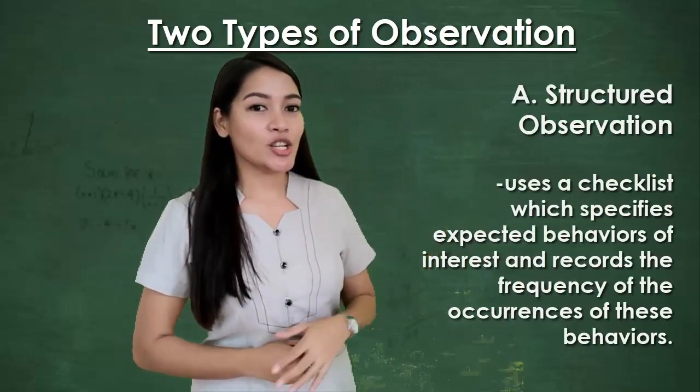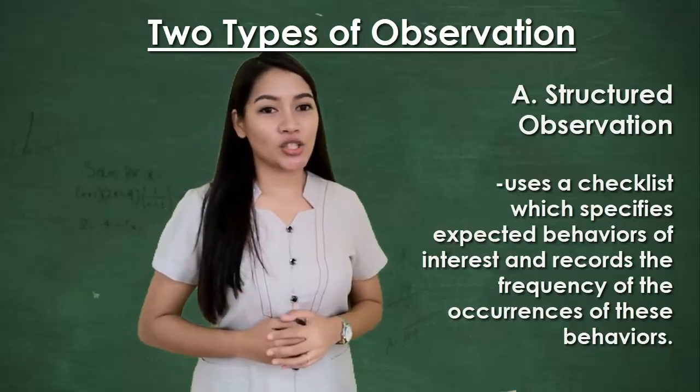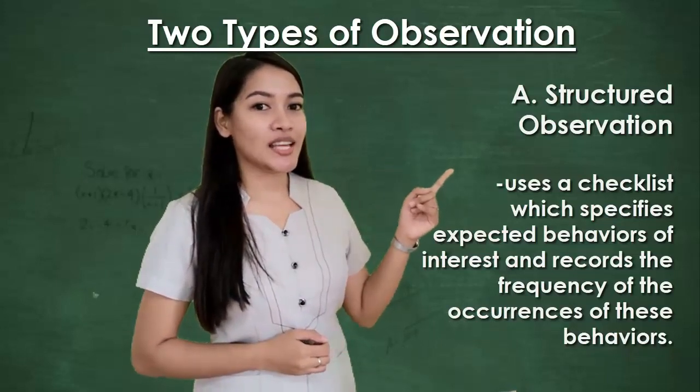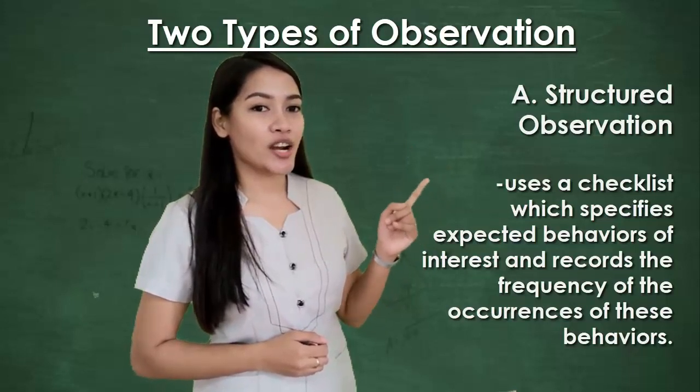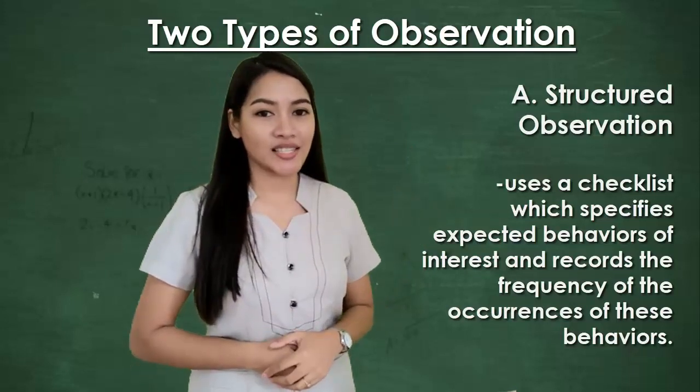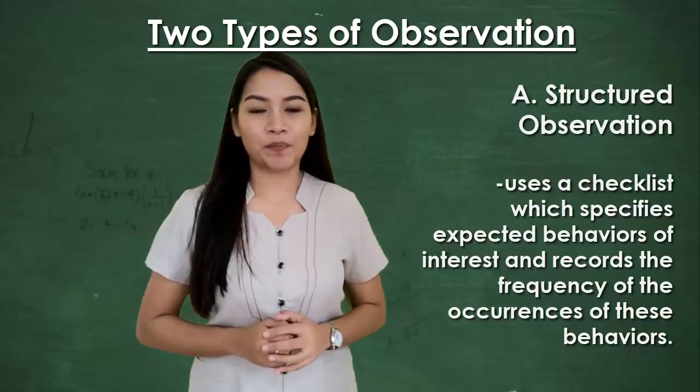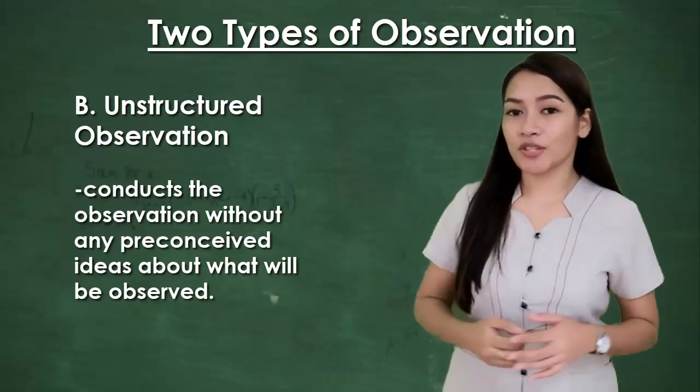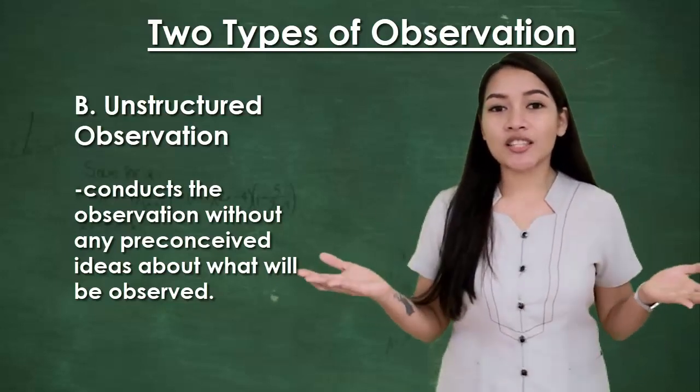In structured observation, the researcher uses a checklist as a data collection tool. This checklist specifies expected behaviors of interest and the researcher records the frequency of occurrences of these behaviors. In unstructured observation, the researcher observes things as they happen. The researcher conducts the observation without any preconceived ideas about what will be observed.